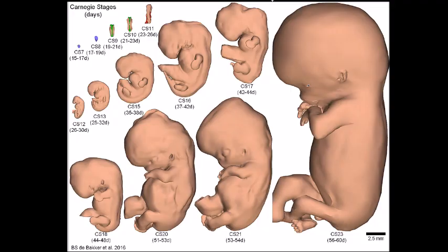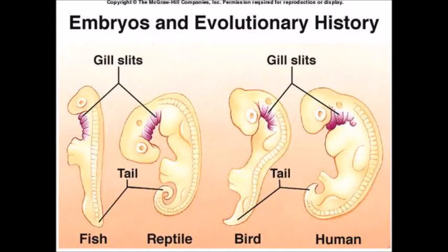Like biogeography, embryology provides strong evidence of evolution. Embryology is the study of the development of animals going from zygote to embryo to fetus. During this development, organisms can show evidence of their ancestry. I will show examples shortly, but I want to make a clarification first.